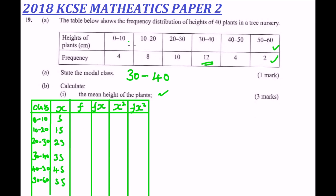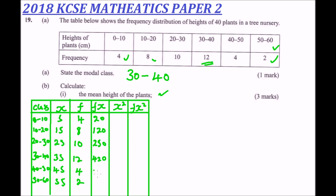The frequencies given are: 4, 8, 10, 12, 4, and 2. We then multiply frequency by midpoint (FX): 5 × 4 = 20, 15 × 8 = 120, and 25 × 10 = 250.